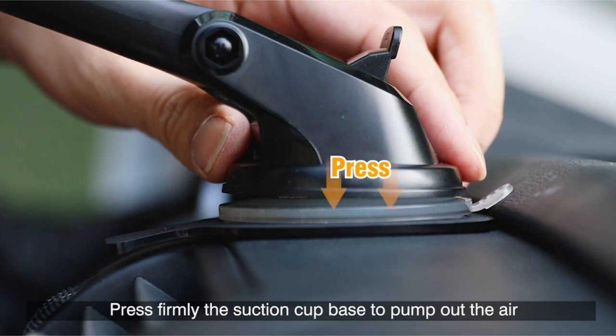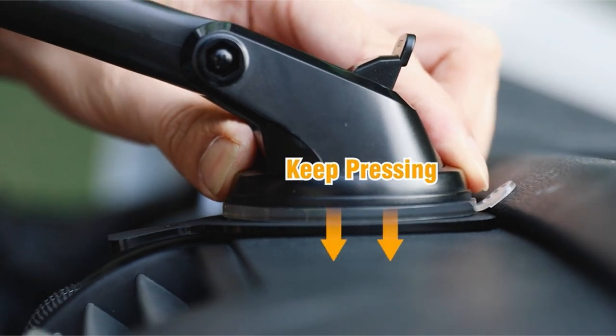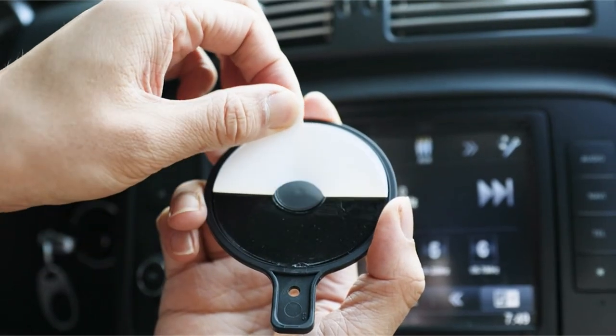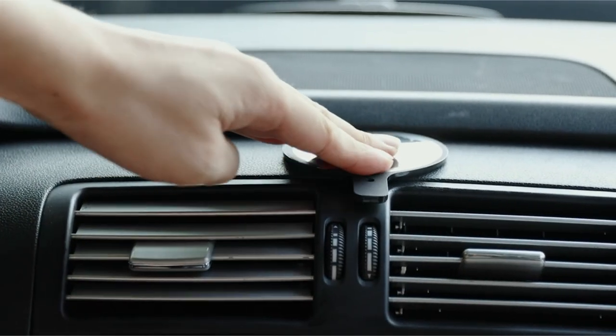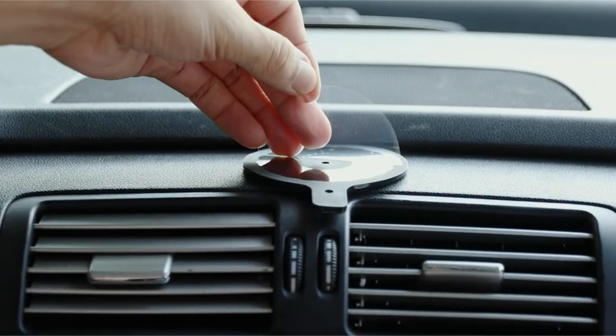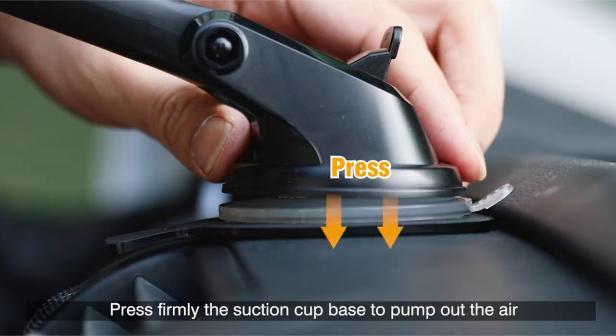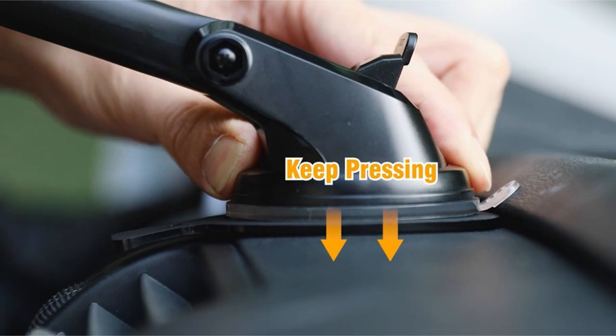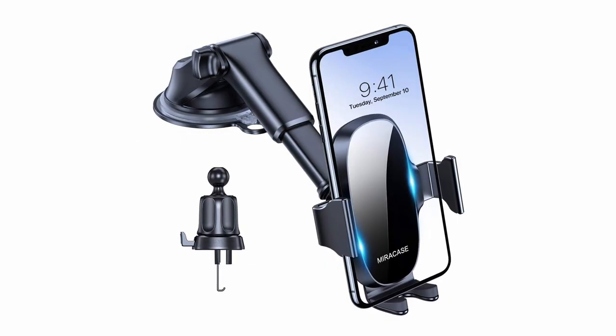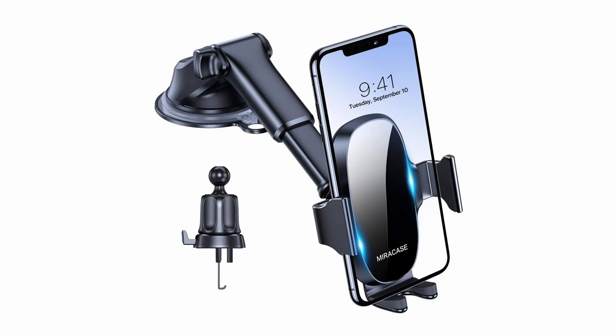MiraCase's wide adjustable arms cater to a broad range of devices, comfortably accommodating phones from 4.0 to 7.0 inches, even with bulky cases. This versatility extends beyond phones, allowing it to hold other devices within the specified width range. The upgraded design goes a step further by incorporating anti-slip materials and a stable support shelf, ensuring your phone stays secure and scratch-free.